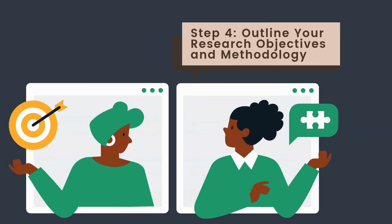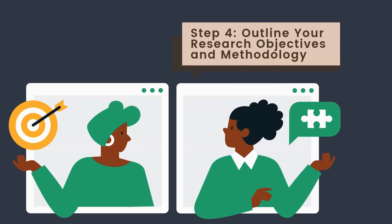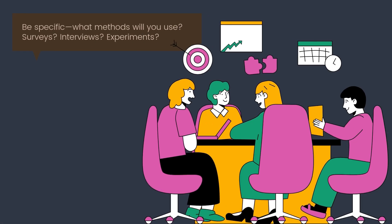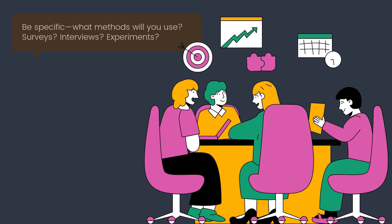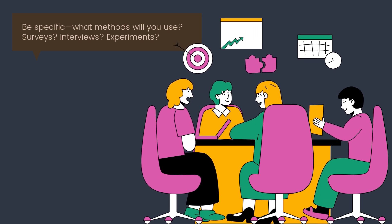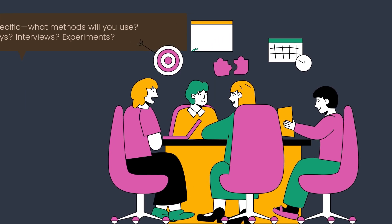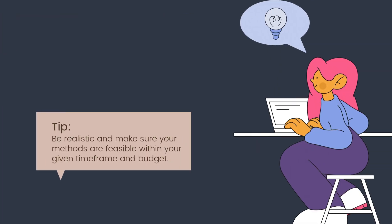This section explains the goals of your research and how you plan to achieve them. Be specific — what methods will you use? Surveys? Interviews? Experiments? Tip: be realistic and make sure your methods are feasible within your given time frame and budget.